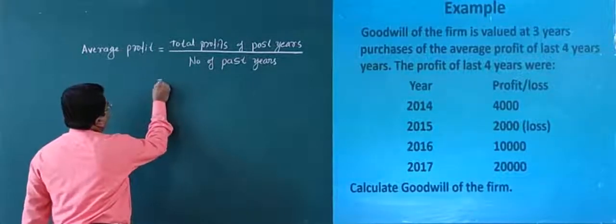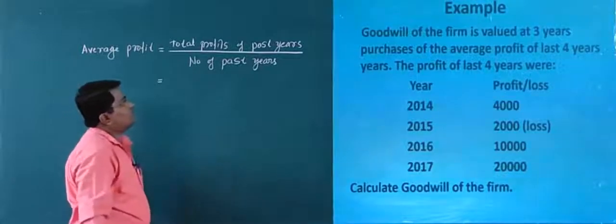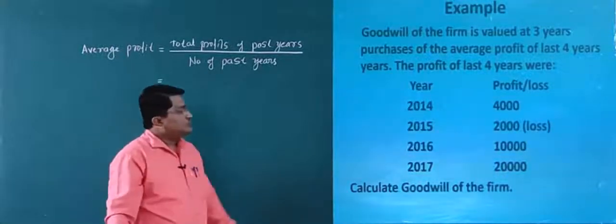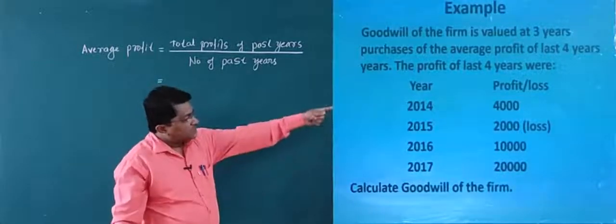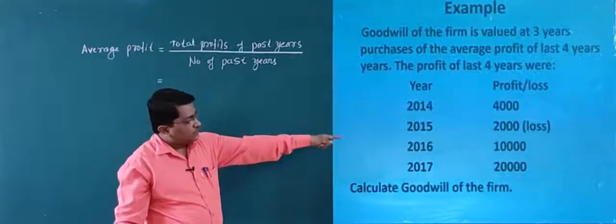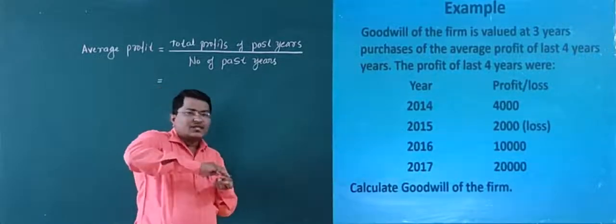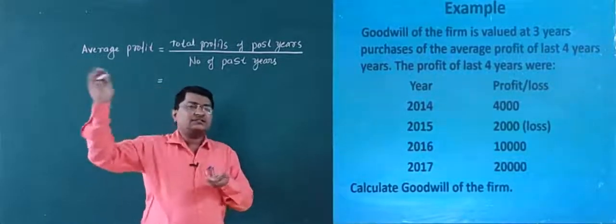First of all, we find total profits of past years. How many years are they given? Four years — 2014, 2015, 2016, and 2017. These are the past years.